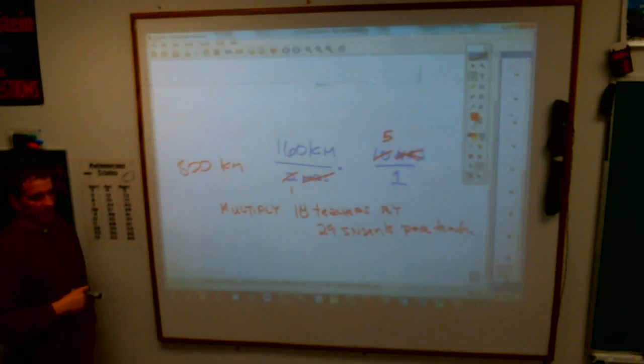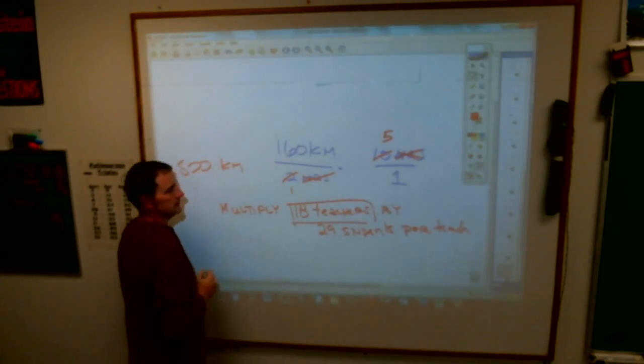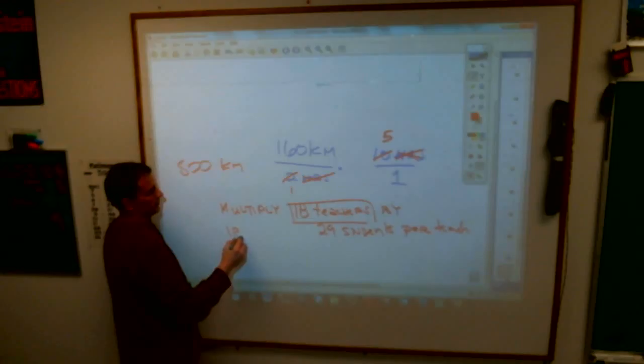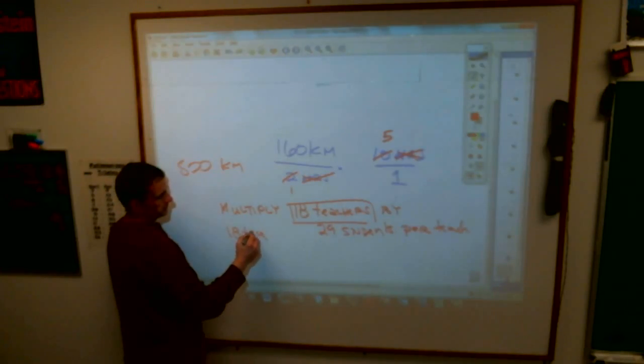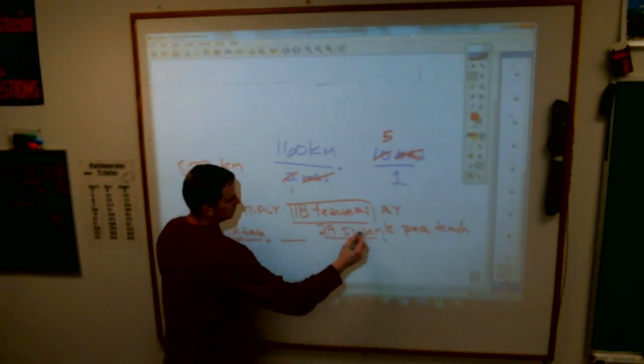What does that look like? Well, you make this a fraction. 18 teachers, you make it a fraction by putting it over 1. 18 teachers over 1. What am I multiplying that by? 29 students.